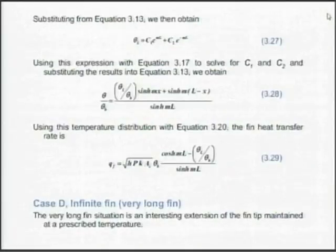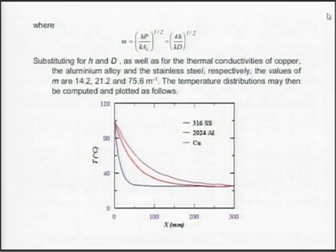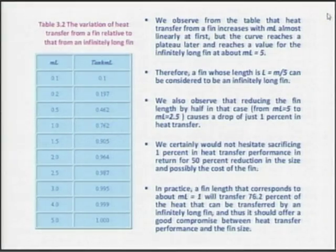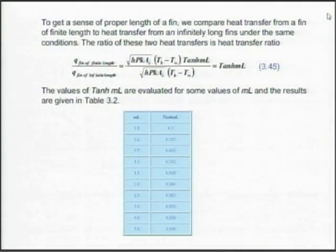One of the questions over coffee was: is this tanh(mL) approximation very sacred? Is it true for all cases? We said that tanh(mL) represents the infinitely long fin. Is mL = 2.5 a sacred number? What boundary condition was used? Q_fin of finite length upon Q_fin of infinite length — for a finite length fin, I took the adiabatic boundary condition. If the boundary condition changes, mL should also change accordingly. This mL = 2.5 is pertinent only to the adiabatic boundary condition. This was just to show how we arrive at infinite length in a finite way.